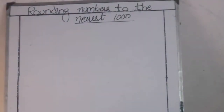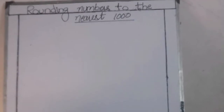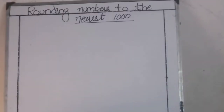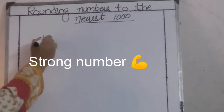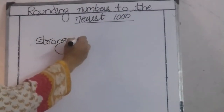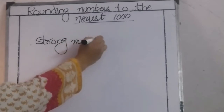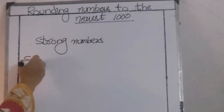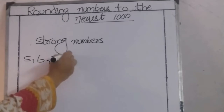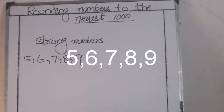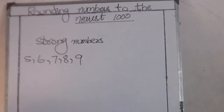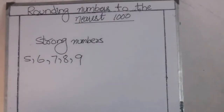Topic: rounding numbers to the nearest 1000. Before starting this topic, we must revise the strong numbers and the weak numbers. Strong numbers are 5, 6, 7, 8 and 9. These are the strong numbers which push up the rounded number.